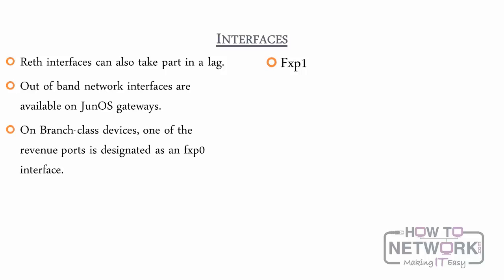Two interfaces, one for each node, must also be designated as FAB interfaces. This is the data plane fabric link. FAB0 is the link for node 0 and FAB1 is for node 1. The interfaces must be the same interface type and be on the same network. They enable session sync and the transit link for data planes in active-active mode. Monitoring is done via fabric probes. An FAB interface failure results in the secondary node being disabled, and a reboot of the primary is required to restore normal operation.